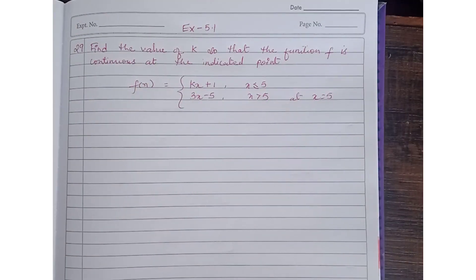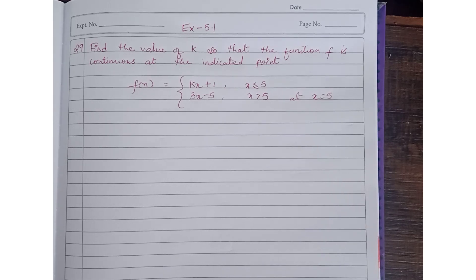Hello everyone, welcome back to the channel. Today we are going to solve question number 29 of exercise 5.1. The question is: find the value of k so that the function f is continuous at the indicated point.